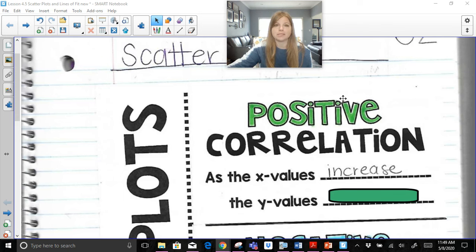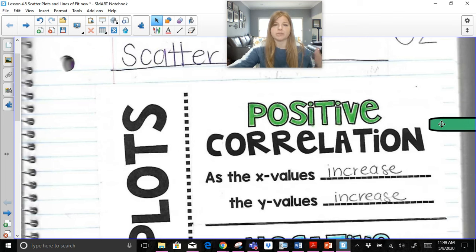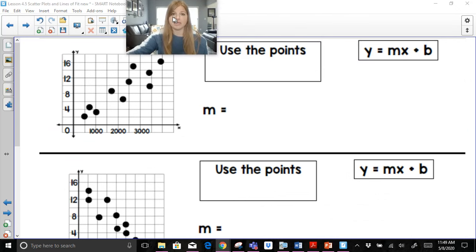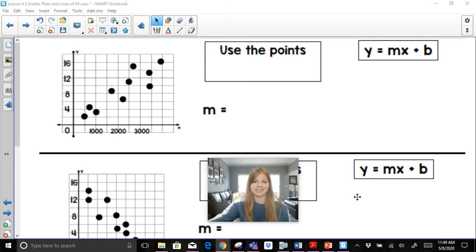So the first one is about a positive correlation. A positive correlation would be that as X values increase, Y values also increase. So as one value goes up, the other value goes up. A classic example of the way a graph would look would be this here. This is a positive correlation. As X values are increasing, we see generally the Y values are increasing.